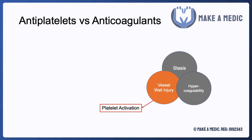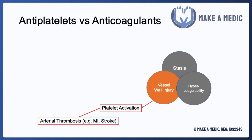On the other hand, if we think about vessel wall injury as being the trigger for a clot forming, the damage to the vessel wall will mean that various subendothelial structures will be exposed to the circulation, and that will result in platelet activation, which will lead to an arterial thrombus forming — such as in a myocardial infarction or in a stroke due to, for example, carotid atherosclerosis. So in that case, if vessel wall injury is the main underlying driver of this pathological clot, you would use antiplatelets such as aspirin or clopidogrel.